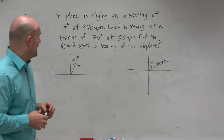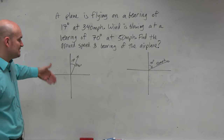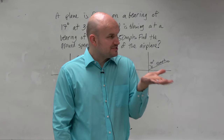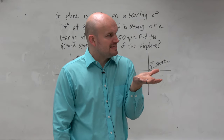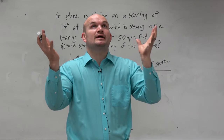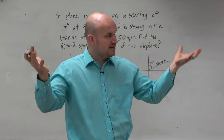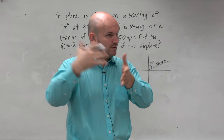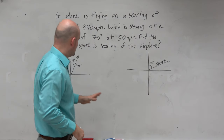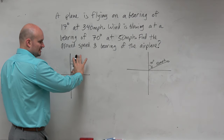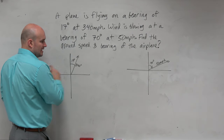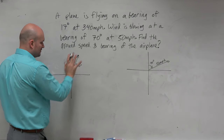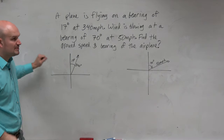What it's asking is: find the ground speed and the bearing of the airplane. Basically, the ground speed is, as you're standing on the ground looking at an airplane, there are forces being impacted on the airplane — like its regular route, but also the wind is affecting it. Here's our plane, and there's our wind. Can we represent this as a vector?